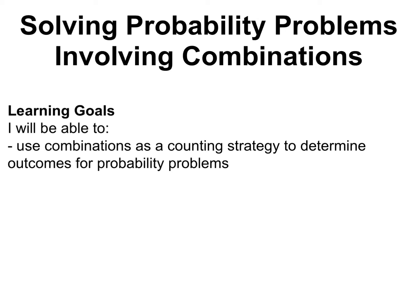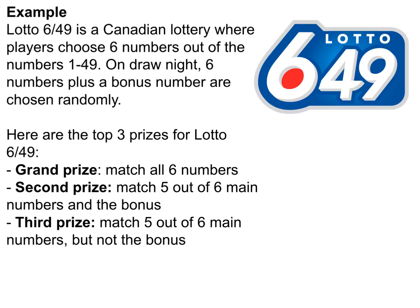This video covers solving probability problems involving combinations. We're going to take a look at the Lotto 649. Players choose six numbers from 1 to 49, and on the night of the draw a machine chooses six numbers and a bonus number. The top three prizes for the Lotto 649 are as follows.